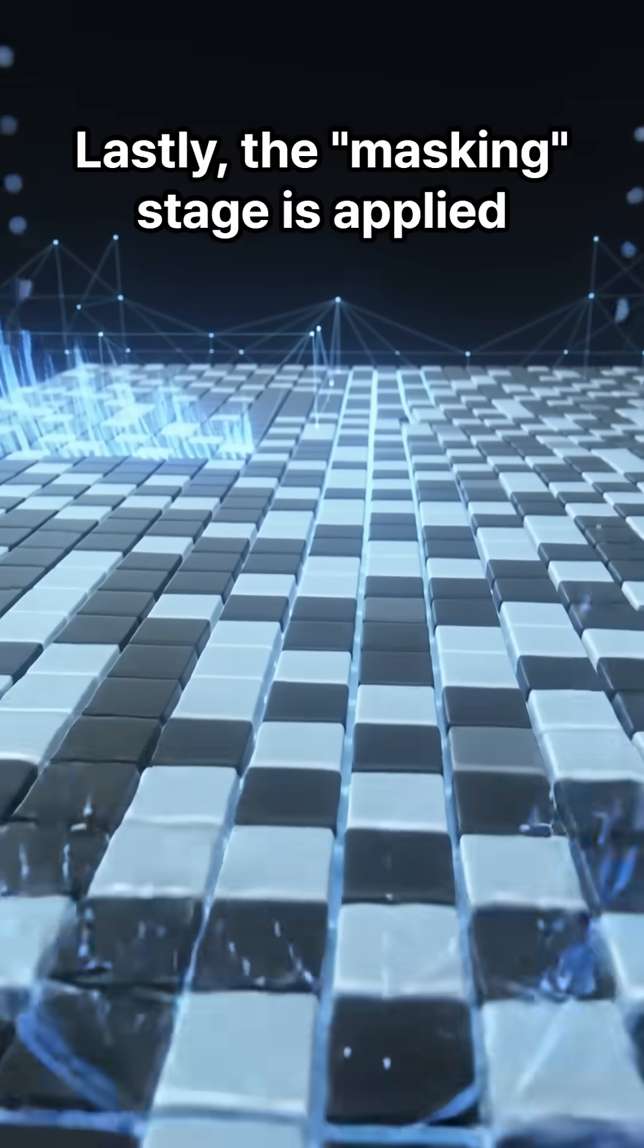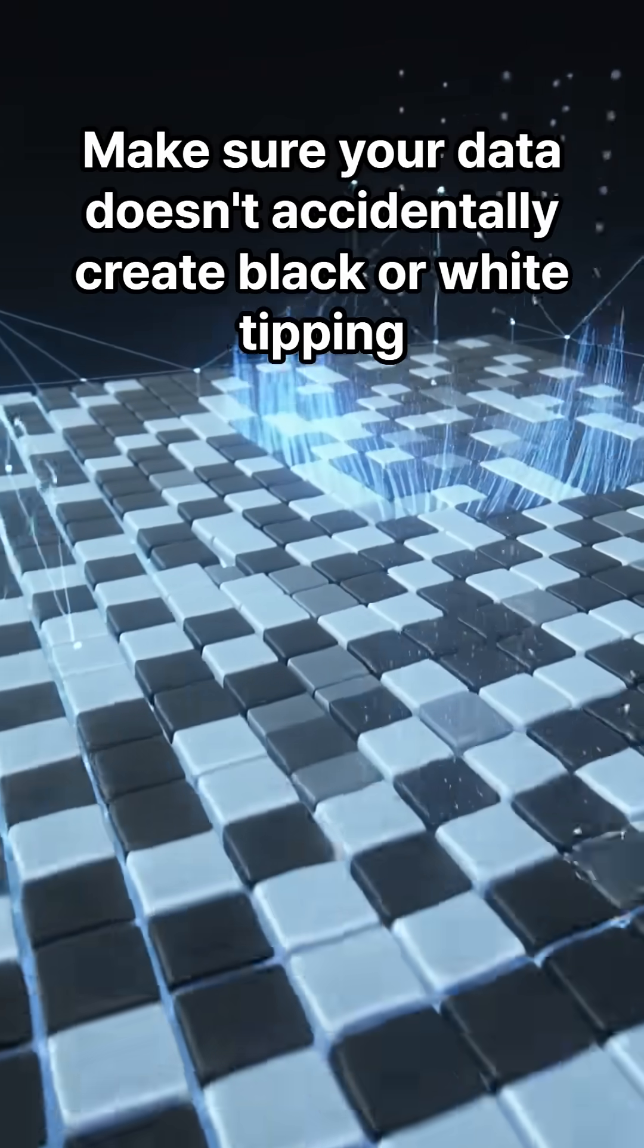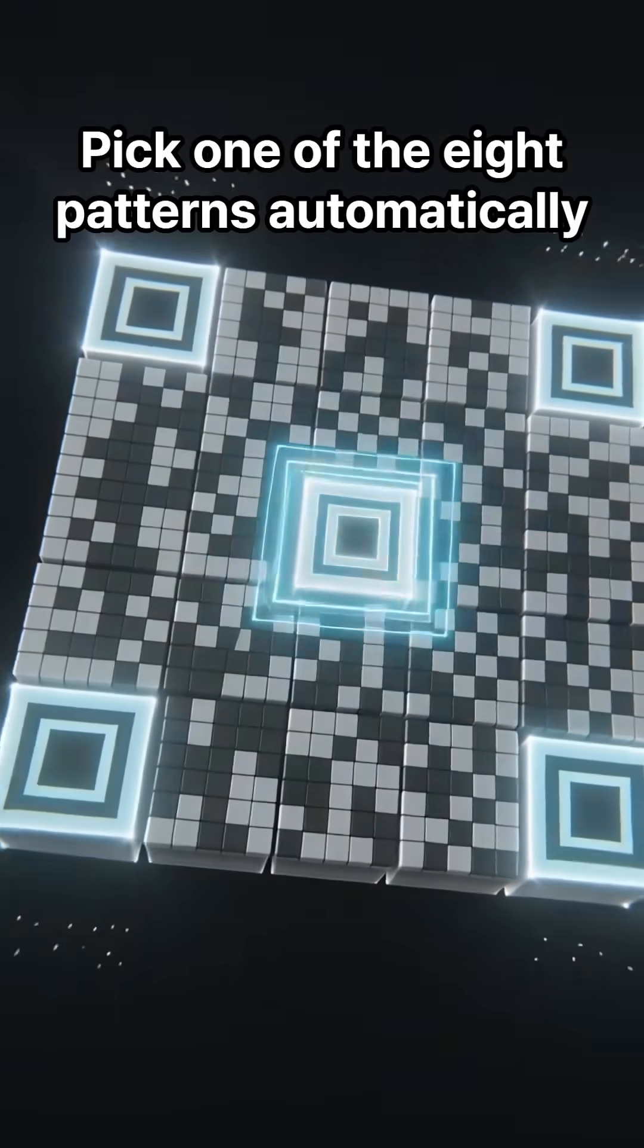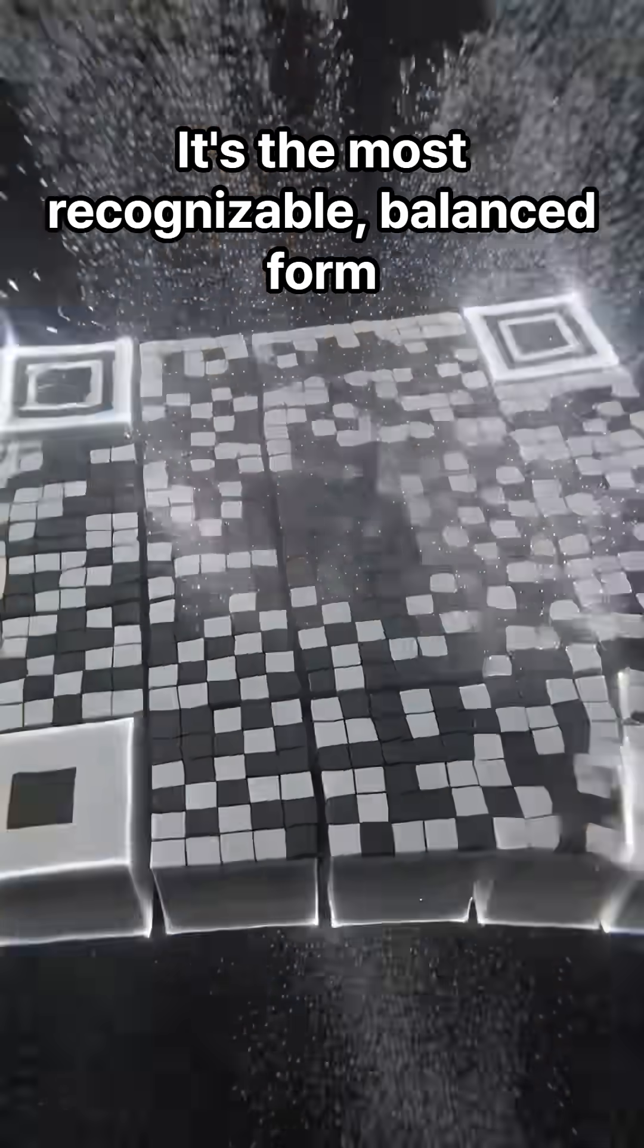Lastly, the masking stage is applied to make sure your data doesn't accidentally create black or white tipping. It picks one of the eight patterns automatically for the most recognizable balanced form.